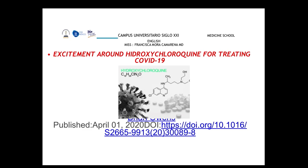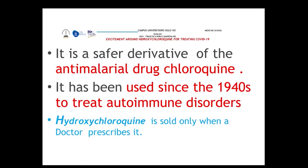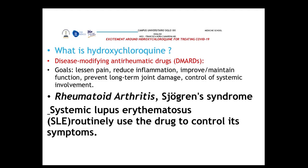Our next topic is the excitement around hydroxychloroquine for treating COVID-19. This medicine is primarily an antimalarial drug that has been used since the 1940s and is commonly used for autoimmune disorders. It is sold only by prescription and is classified as a disease-modifying anti-rheumatic drug. Its goals include lessening pain, reducing inflammation, improving function, preventing long-term joint damage, and controlling systemic involvement.